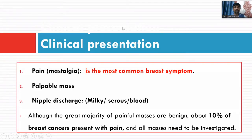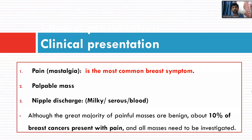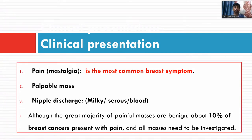Most clinical presentations of breast disease begin with pain — mastalgia is the most common breast symptom, followed by palpable mass and nipple discharge, which can be milky, serous, or bloody. Although the great majority of painful masses are benign, only 10% of breast cancers present with pain. Breast cancers are dangerous because they grow quickly without causing pain or symptoms — that is why screening is very important. Bloody discharge is more likely to be a benign papilloma than a malignant lesion.